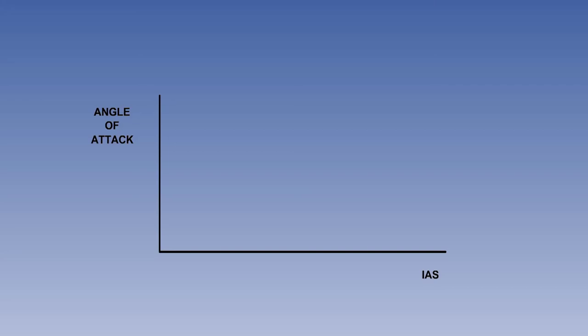As the lift changes with the square of the speed, but in direct proportion to the angle of attack, the angle required for constant lift will vary as shown on the graph on the screen. The minimum possible level flight speed, VS, for any given lift force is achieved at the critical, or stall, angle of attack.